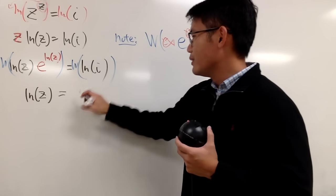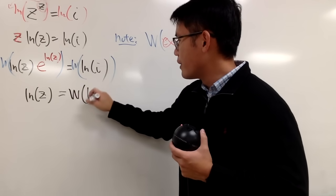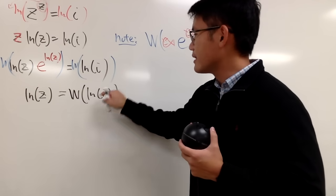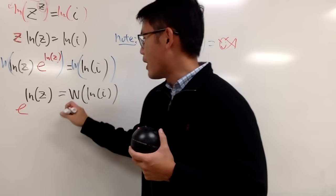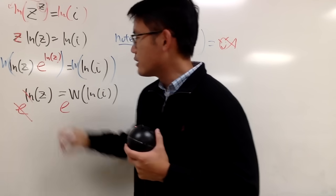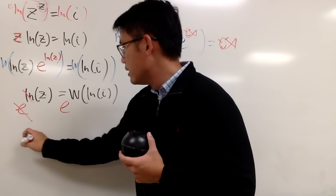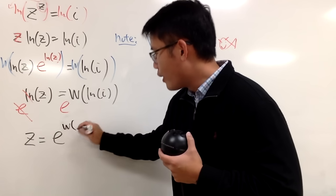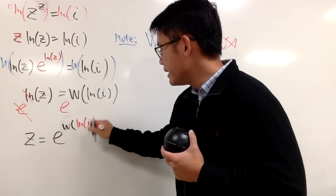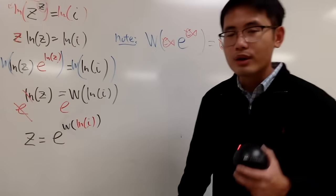On the right-hand side, you can still write down W of ln of i, like this. And in the end, to get z by itself, of course, we can just do e to the power and e to the power, so they cancel. And finally, you see that z is equal to e raised to the W of ln i, like this, for the power.